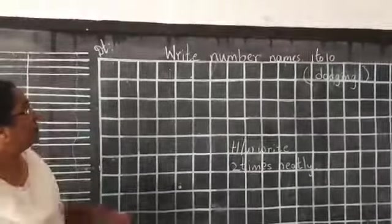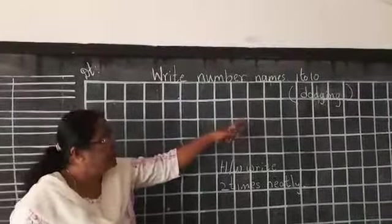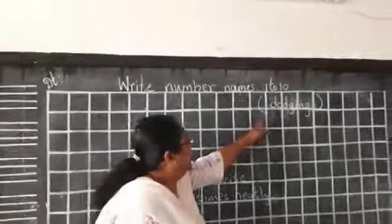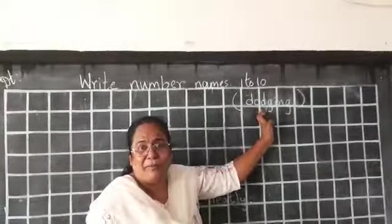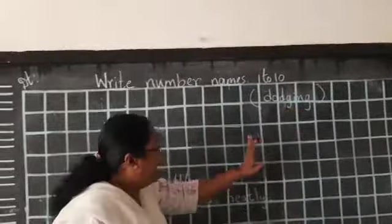Good morning children. I have already written number names 1 to 10. See here, by mistake I wrote them jumbled. Please read it and write correctly now.